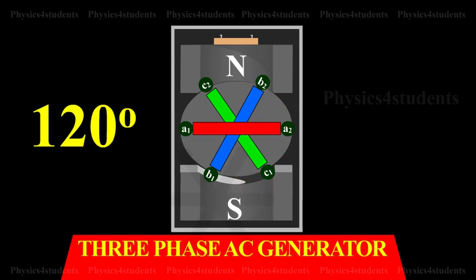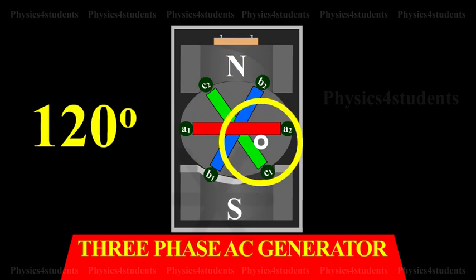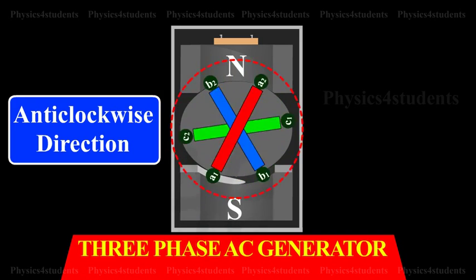Three coils A1-A2, B1-B2, and C1-C2 are mounted on the same axis but displaced from each other by 120 degrees, and the coils rotate in the anti-clockwise direction in a magnetic field.